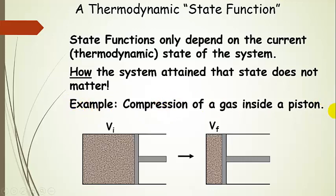Another example is compression of a gas inside a piston — a delta V example. Here's our initial volume. We can either push the piston slowly or more quickly. Or we can do this much one day, come back and do this much, come back and do this much. But the bottom line is, if we're going to the same final volume, delta V is going to be the same regardless of which path we choose — slowly, quickly, on a day-by-day basis, or any other path.